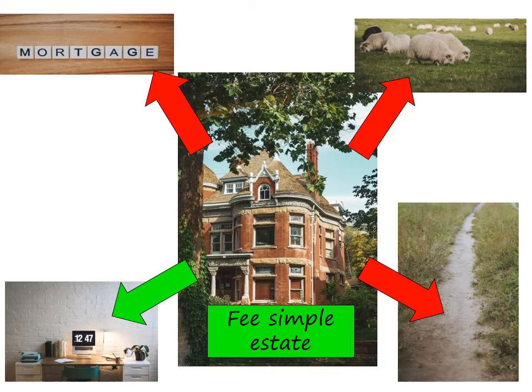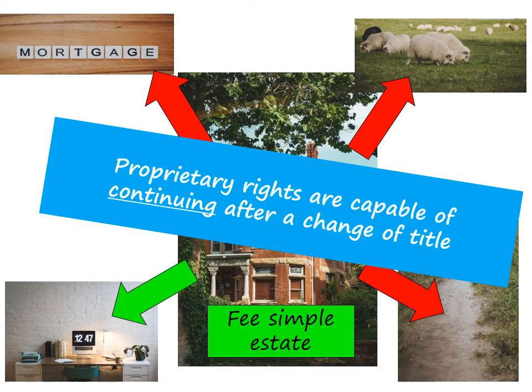Now let's come to the crux of the matter. If you want to know what land law is all about, it's about how these rights can affect a purchaser or new owners of the land. And we call these rights, which can affect purchasers, proprietary rights. So the rights that Lee, Mrs. East, Farmer Giles and the bank have are capable of binding not just Sarah, but also third parties who were not part of the original agreement, but who become the new owners of the land.